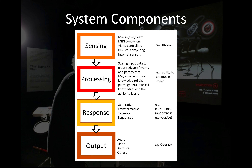An interactive system is made up of four components: sensing, processing, response, and output. Sensing is how we get data in from the real world — mouse, keyboard, MIDI controllers, video controllers, physical computing controllers like flex sensors, custom buttons and sliders, or internet sensors picking up things like stock values or Twitter data. Processing makes this data usable — we create triggers, events, and parameters, and this may involve giving the system musical knowledge such as scales or rhythm.